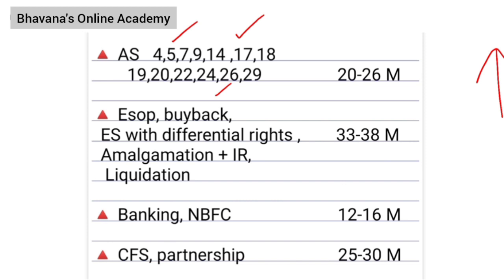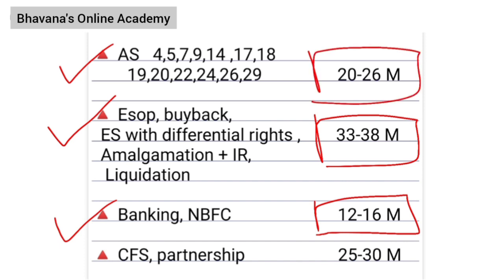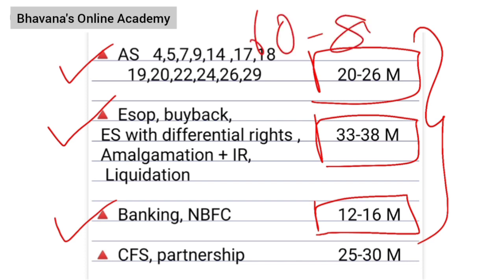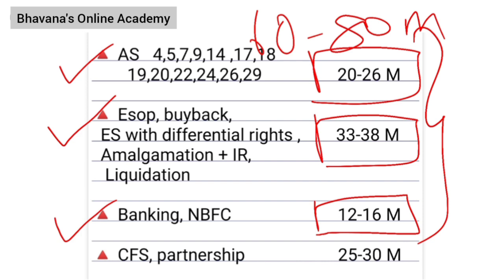To give you a recap: first, start with banking and NBFC to secure your 12 to 16 marks; then study the set of five chapters to get your 33 to 38 marks; and third, study your AS which comes for 20 to 26 marks. If you read all of these, 60 to 80 marks in your exam are definitely secured, which means you will be able to score either exemption or even higher. Focus on these chapters in this order — first secure your 40 marks, then plan to secure your 60 marks.